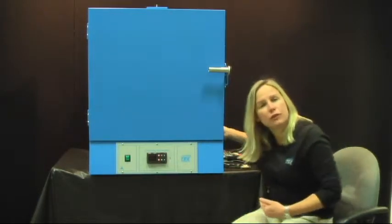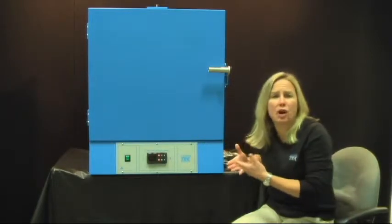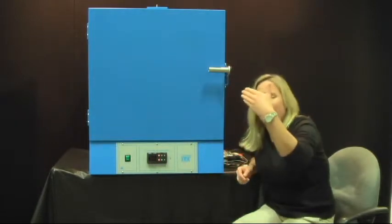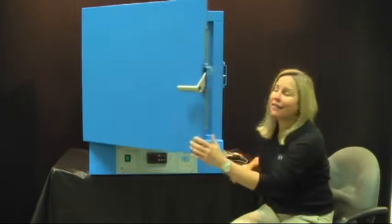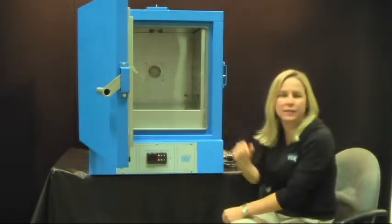The way it works is there are louvers on the side and back of this oven and that's where fresh air is drawn in, passed across heaters, across a fan, and then that air is forced in a horizontal pattern across the shelves.